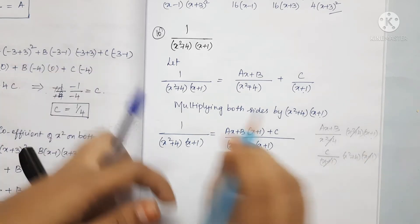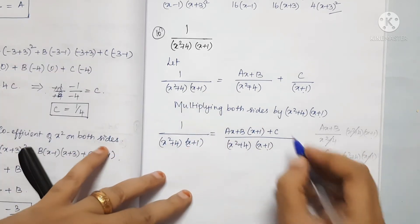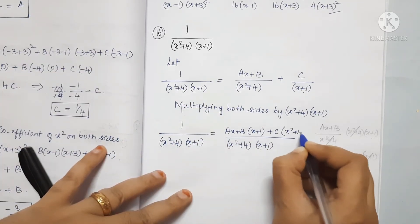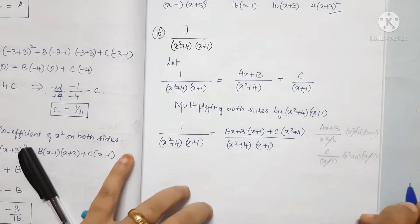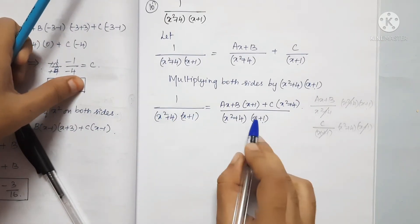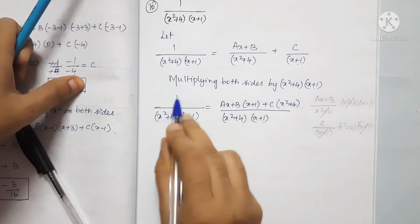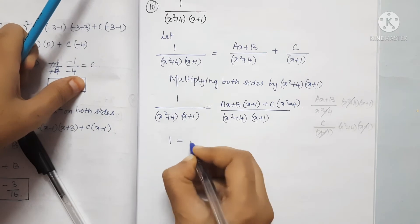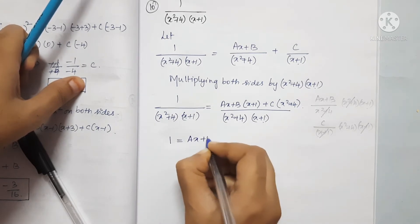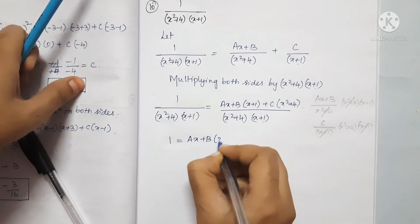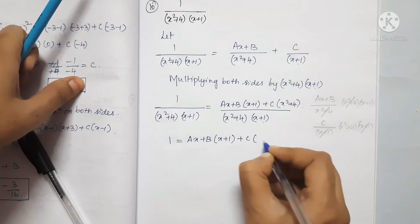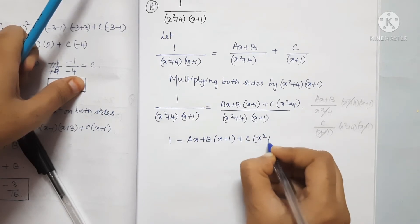After the denominators cancel, we get the equation: 1 equals (Ax plus B)(x plus 1) plus C(x squared plus 4).